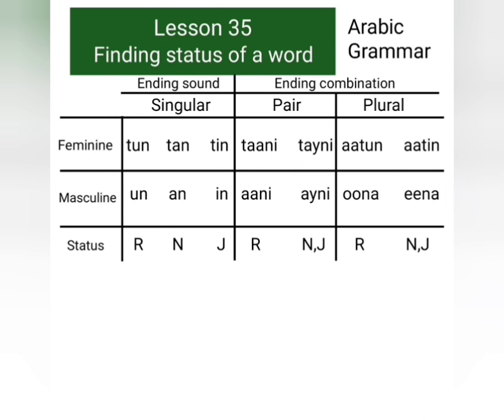Now we see the status of these ending sounds and combinations. Feminine singular words with ending sound tun have the status rafa, those with ending sound tan have the status nasab, and those with ending sound tin have the status jar.